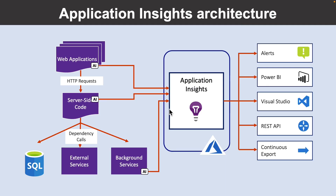For the Application Insights architecture, you install a small instrumentation package in your application and set up an Application Insights resource in the Microsoft Azure portal. The instrumentation monitors your application and sends telemetry data to the portal. You can instrument not only the web service application but also any background component and the JavaScript in the web pages themselves. In addition, you can pull in telemetry from the host environment such as performance counters, Azure Diagnostics, or Docker logs. You can also set up web tests that periodically send synthetic requests to your web services. All the telemetry streams are integrated in the Azure portal where you can apply powerful analytic and search tools to the raw data.